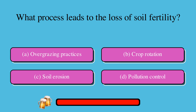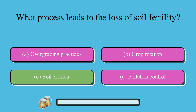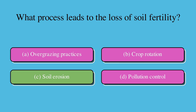What process leads to the loss of soil fertility? A. Overgrazing practices, B. Crop rotation, C. Soil erosion, or D. Pollution control? The correct answer is C. Soil erosion.